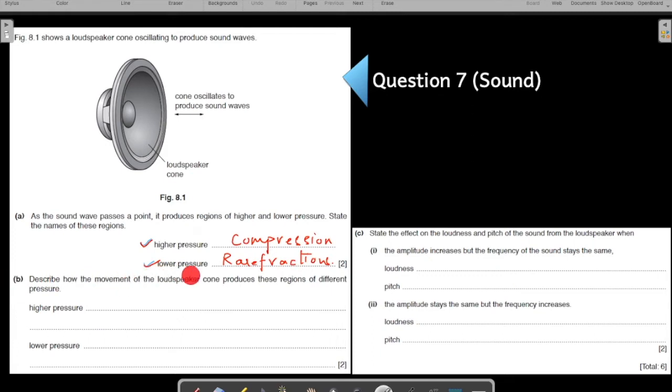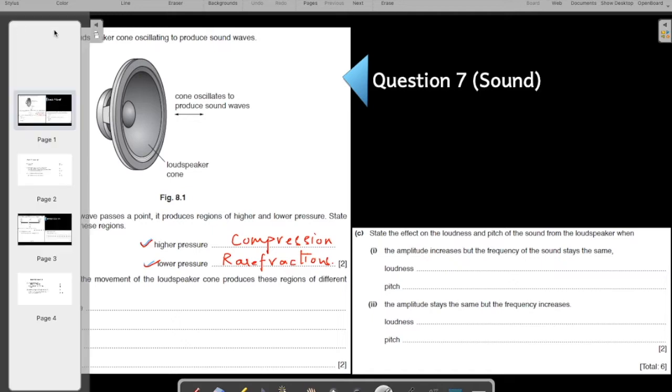Part B: Describe how the movement of the loudspeaker cone produces these regions of different pressure. What kind of movement of the cone will produce high pressure? This is done in video number one of sound where we understood that sound waves are longitudinal waves. All the theory videos that we have done on this chapter are relevant - questions can come on just any topic. High pressure when the cone moves out, low pressure when the cone moves backwards.